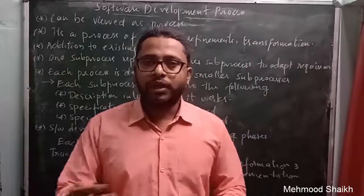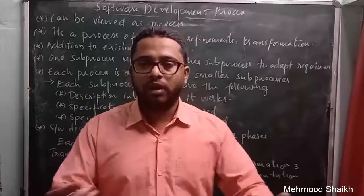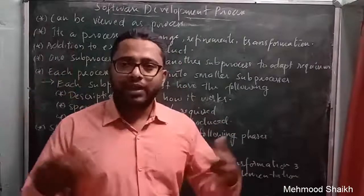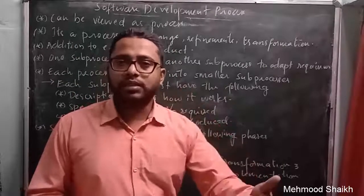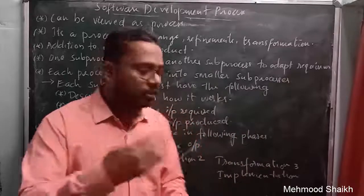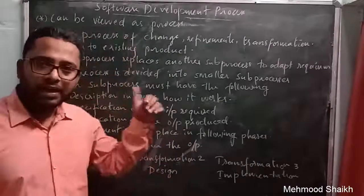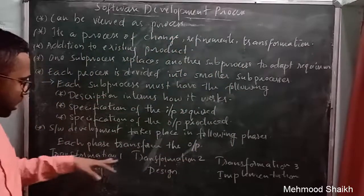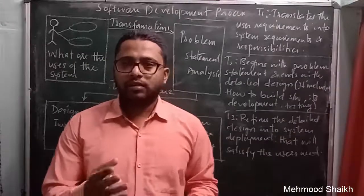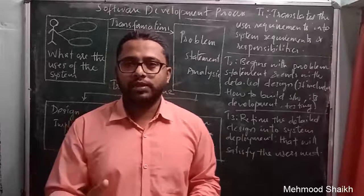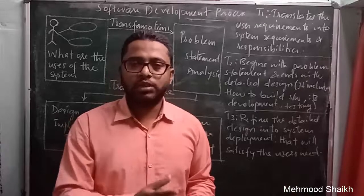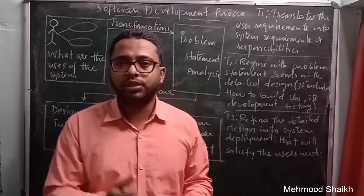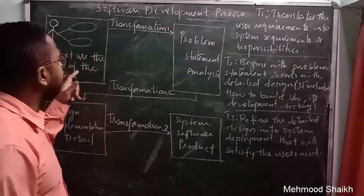Software development takes place in various phases. Each phase transforms the output, improving the functionality of the software. Based on these transformations, the entire software development process is divided into three phases: Transformation 1, Transformation 2, and Transformation 3. Let us now see what changes get reflected with each transformation of system development.